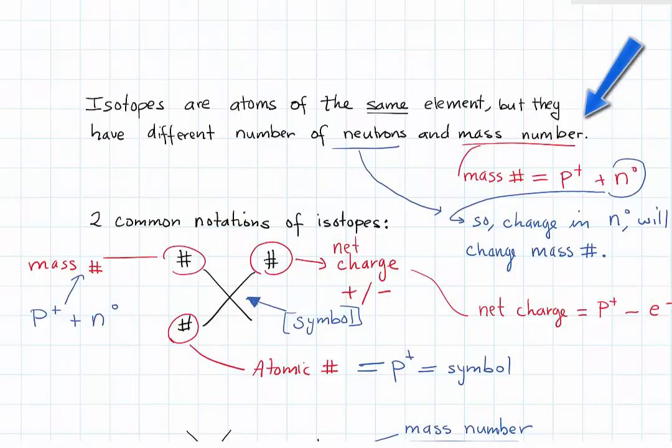Mass numbers can be calculated by taking the number of protons plus the number of neutrons. So if you change the number of neutrons, you also change the mass number.